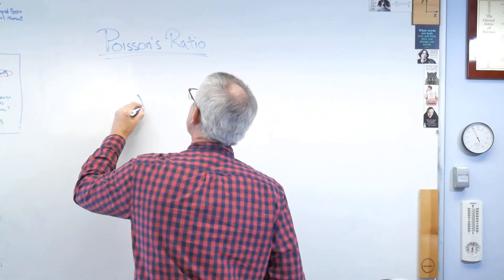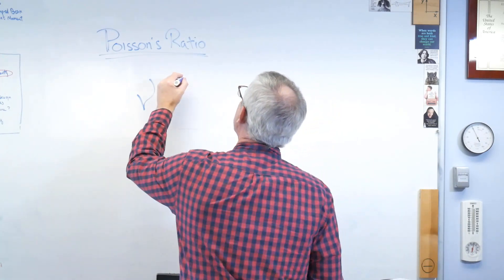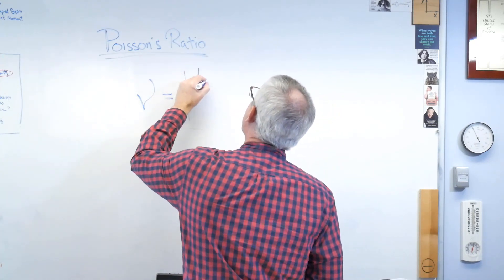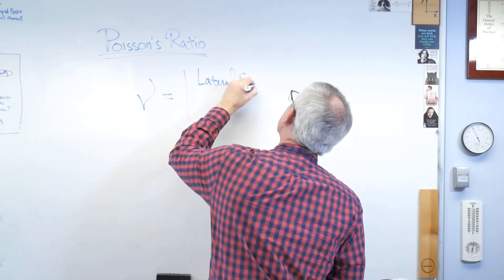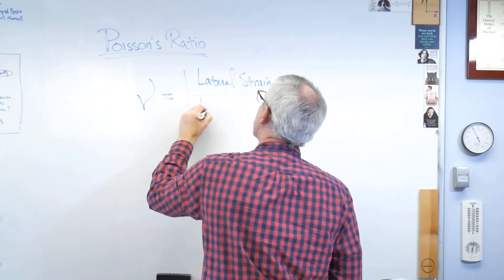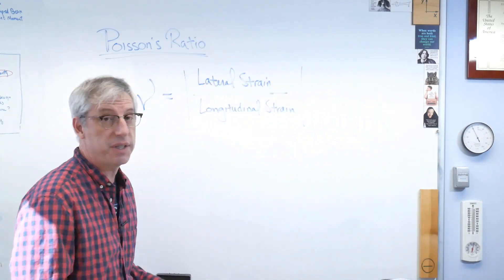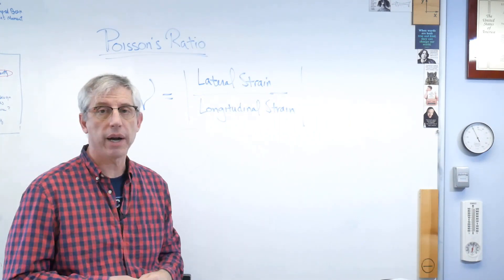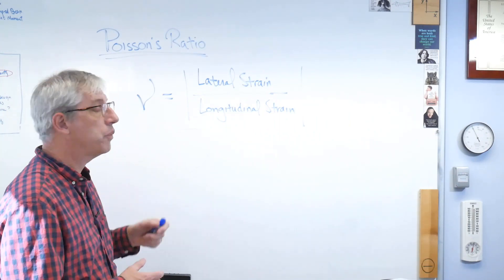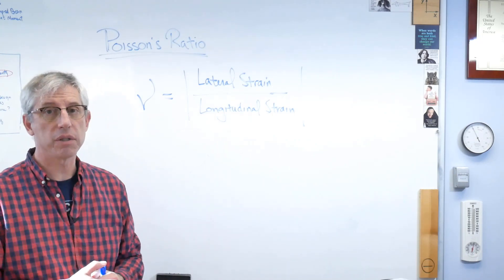Poisson's ratio is defined by the Greek letter nu. Now why that's called nu, I don't know, but that's what that is. And it's a ratio of strains. It's lateral strain divided by longitudinal strain. And notice it's the absolute value of those. For most, almost all practical materials, Poisson's ratio is positive. There is such a thing as a negative Poisson's ratio, but it's very, very rare.